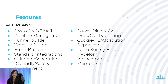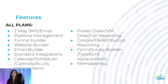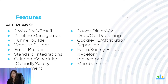All the plans include these features: two-way SMS and email, pipeline management, a funnel builder, a website builder, an email builder, integrations, a calendar scheduler replacement — so you don't need Calendly or Acuity anymore — a power dialer, voicemail drop, call reporting, Google and Facebook attribution reporting. No more paying for expensive standalone products — you can do all of that inside High Level. You can also use the form and survey builder, which is a Typeform or JotForm replacement.